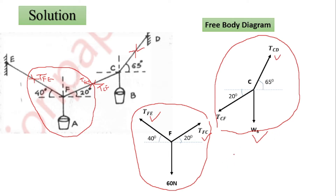We have only two conditions of equilibrium, so we cannot solve both joints simultaneously. We consider joint F first because its weight value is known — one unknown is already known. That way we can calculate TFE and TFC. If we consider joint C first, then TCF, WB, and TCD are all three unknown, so we cannot approach it that way. We start with joint F, find TFE and TFC, and note that TFC equals TCF — same tension in the same cable with the same value but opposite direction.